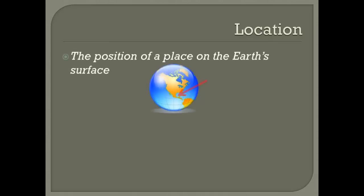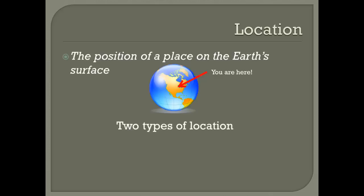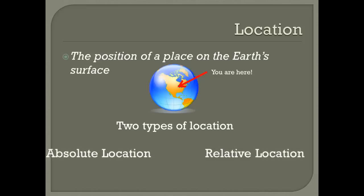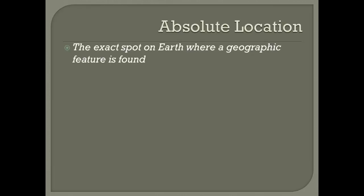The first theme that we are going to define is Location. Location is simply the position of a place on the Earth's surface. With this theme, we are only describing where a place is. Geographers use two types of location to describe a location: absolute location and relative location.